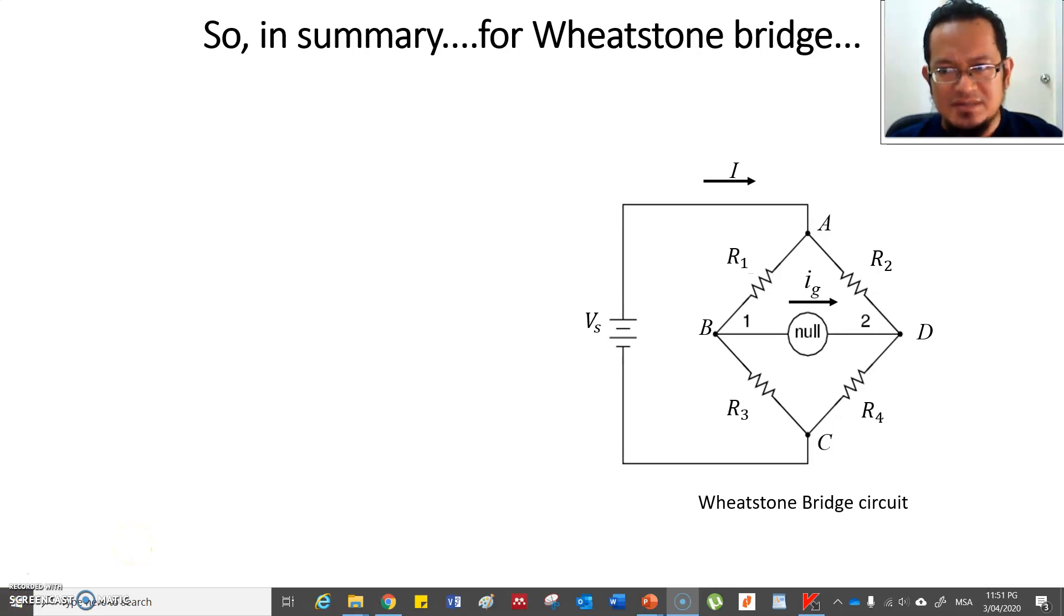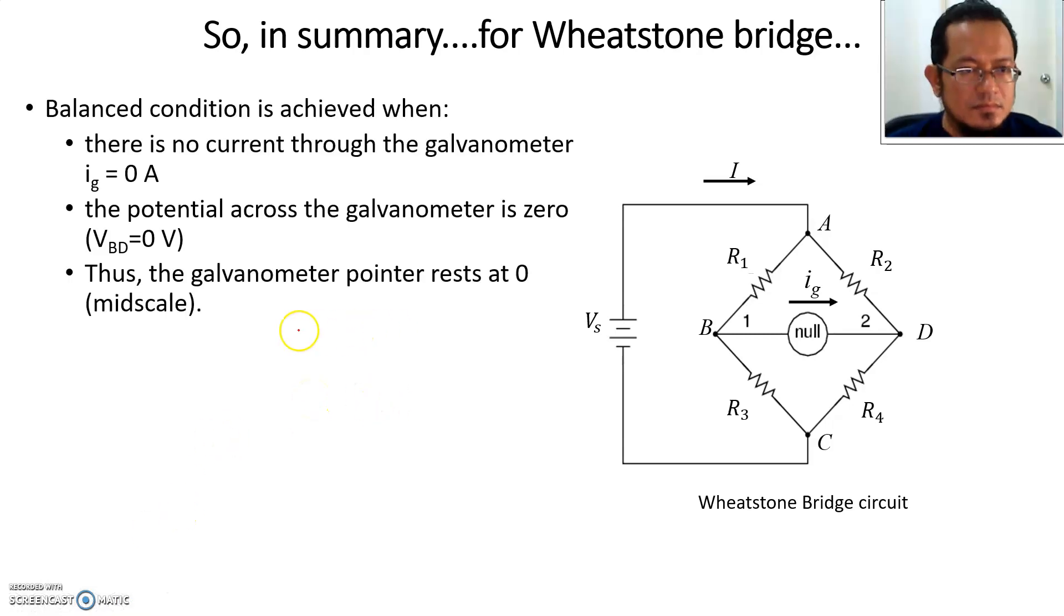In summary, from our last lecture, we know that for a balanced condition, for a balanced Wheatstone Bridge, there is no current through the galvanometer. The galvanometer current should be zero. And the potential difference across the galvanometer is zero.